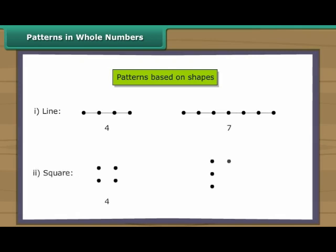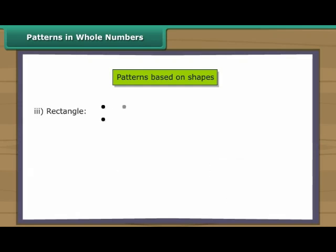Some numbers can be arranged as squares. For example. Some numbers can be arranged as rectangles. Rectangles can be horizontal arrangement or a vertical arrangement. For example. Some numbers can be arranged as a triangle. For example.